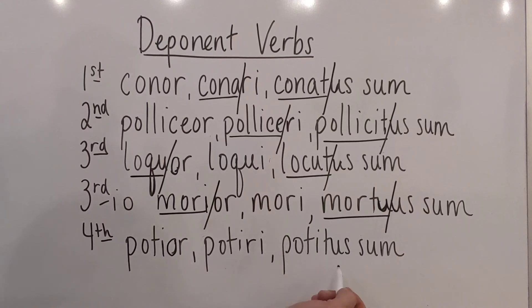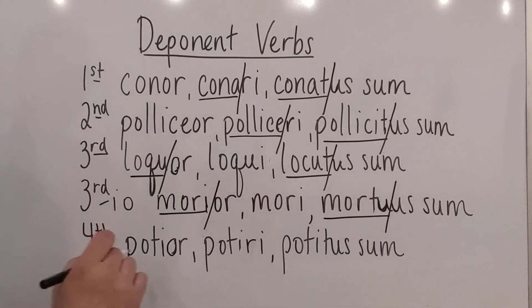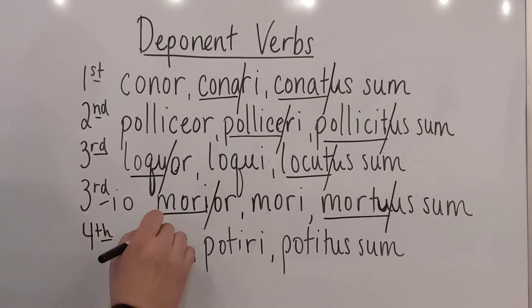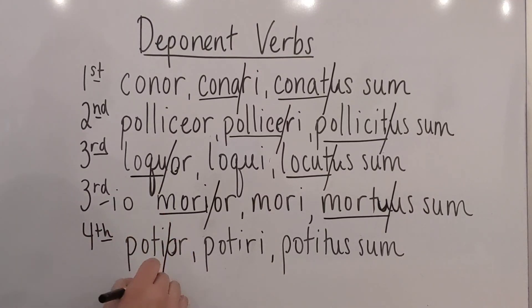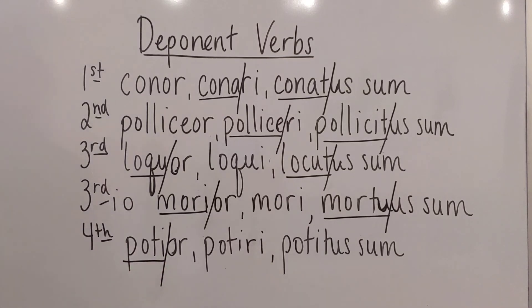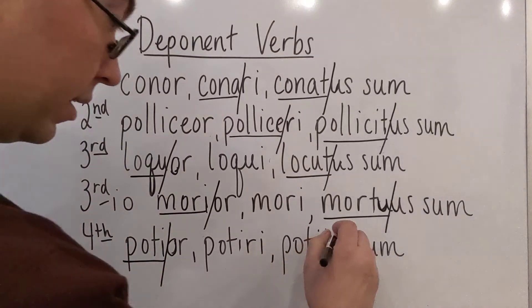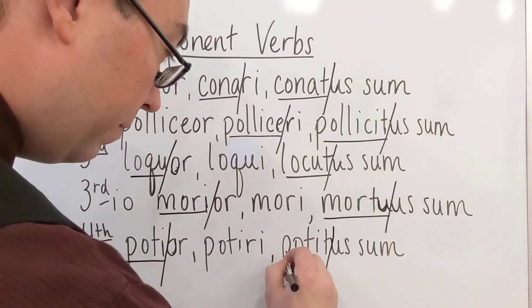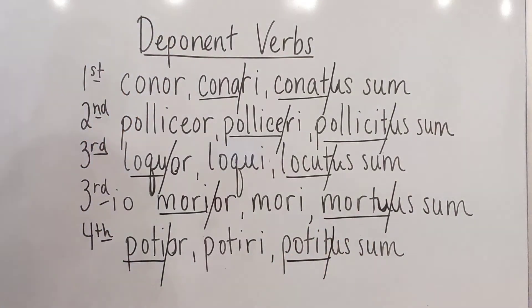Potior, potiri, potitus sum. Once again, go to the first principal part, chop off the -or because we're in passive land, and poti- is going to be the stem. The supine stem is going to be potit-.